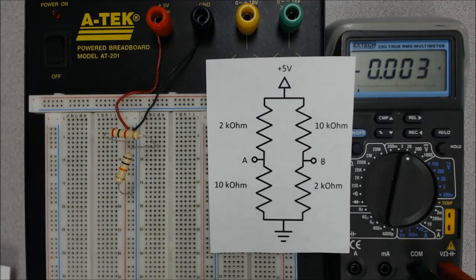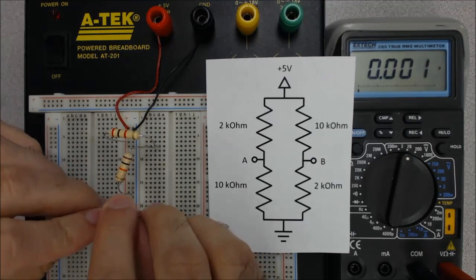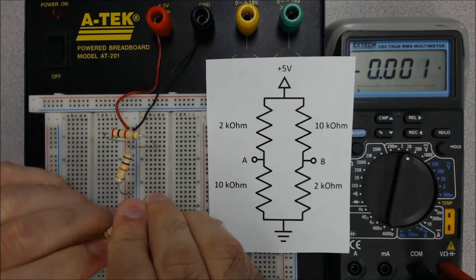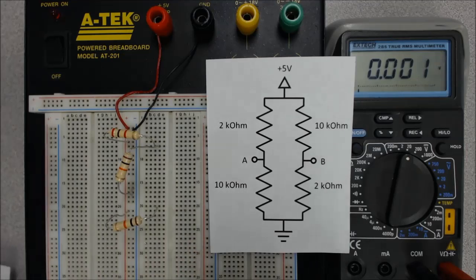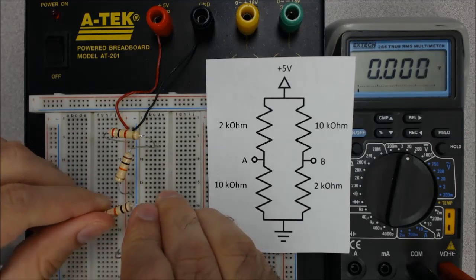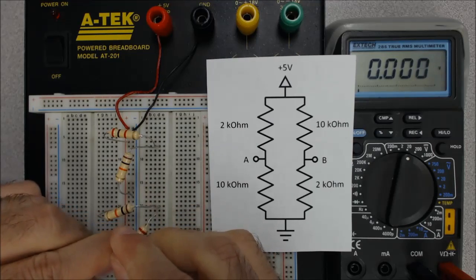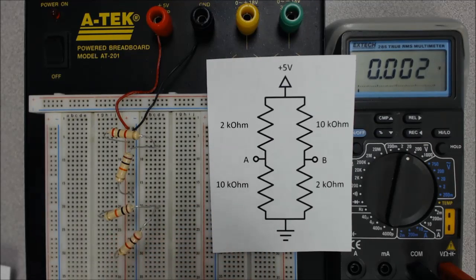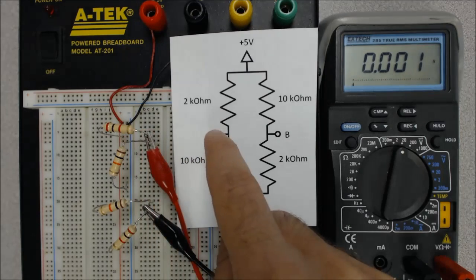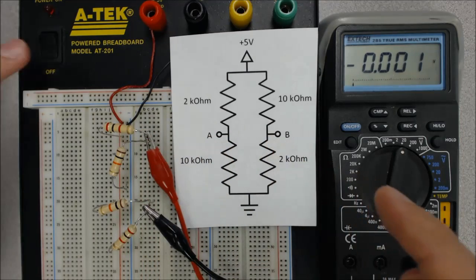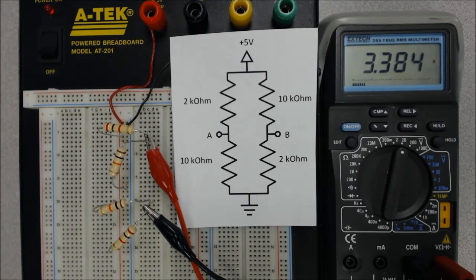And now I need to do the same thing on the other side, but now I want the 10 kilohm resistor going from 5 volts to a new common node now, because A and B aren't connected. And I need another 2 kilohm resistor, which I'll put between that same common node and ground now. And just like I did before, I can measure the voltage at A relative to the voltage at B. And when I turn on the breadboard, I get 3.38 volts.